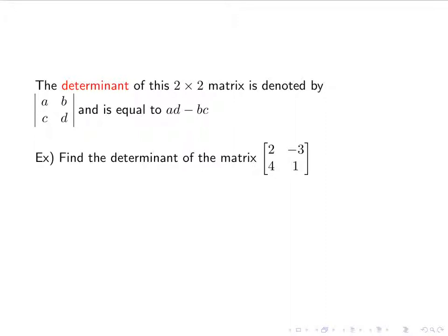So we'll do some examples. Find the determinant of the matrix 2, 4, negative 3, 1 — or sometimes called 2, negative 3, 4, 1, depending on if you're saying them from top to bottom or left to right. It doesn't really matter. Here is what the determinant looks like symbolically.